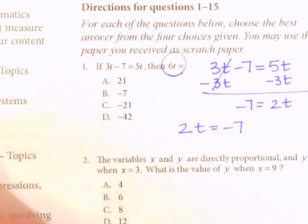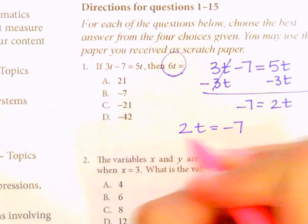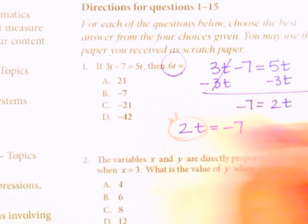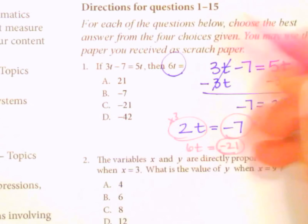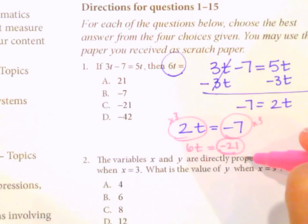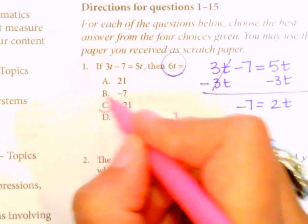Well, 6t is just 3 times 2t. So we'll take this value, multiply it times 3, and then we'll do this times 3 as well. Whatever you do on one side of the equation, you have to do on the other. So this will give us 6t equals negative 21. So 6t is what we're looking for, negative 21. Our answer is C.